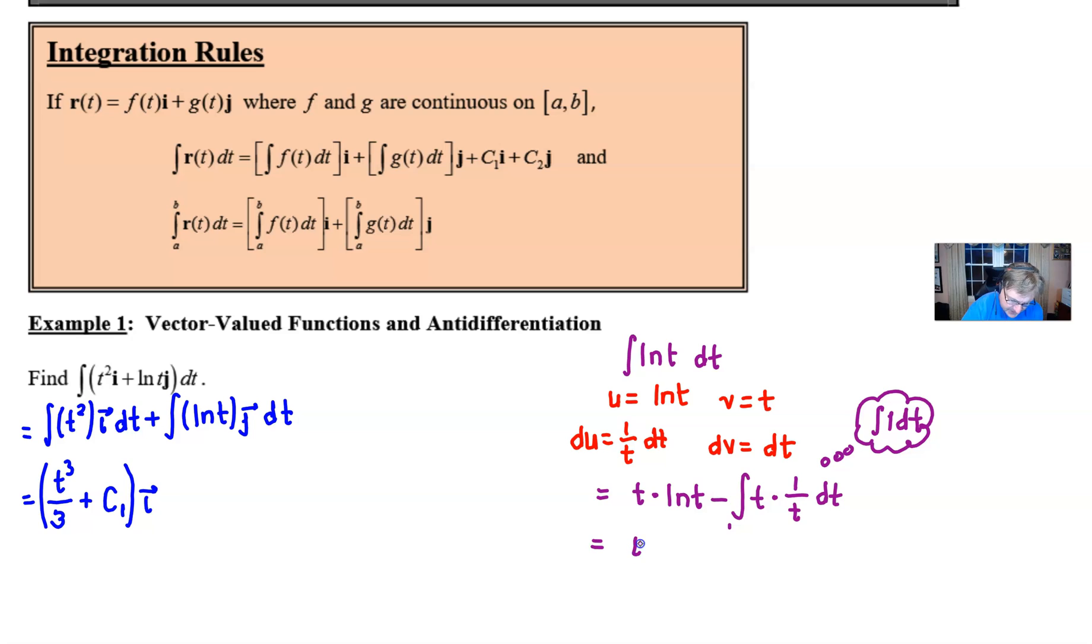So when all the dust settles, this is what you would have for the indefinite integration of natural log of t. And of course in general you would have a constant.